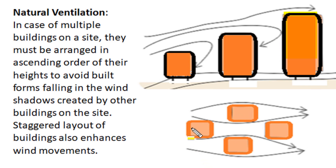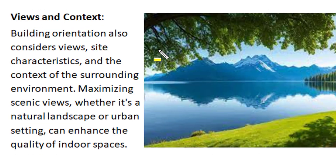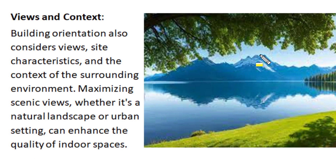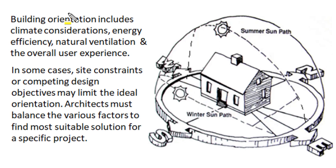When multiple buildings are placed, they must be arranged in a staggered layout to enhance and improve wind movement and support natural ventilation. Building orientation should also consider views or site characteristics and the context available in the surrounding environment. Maximizing pleasing views — whether natural landscape or urban structural settings — from the building can enhance the quality of indoor space, provide a better feeling to inmates, and enhance comfort and well-being.